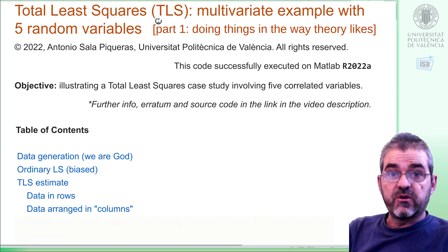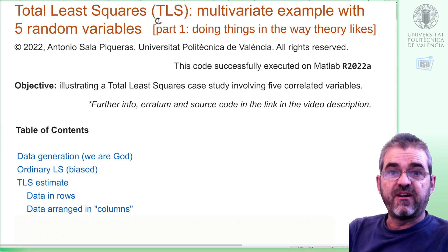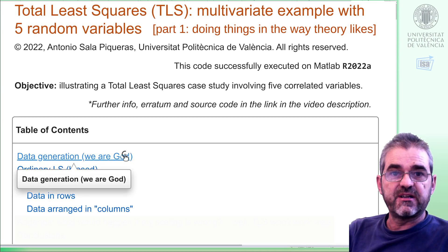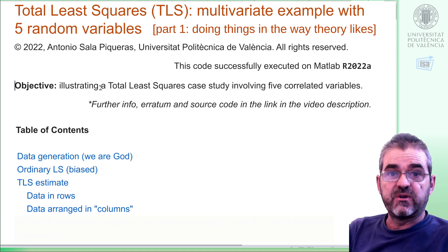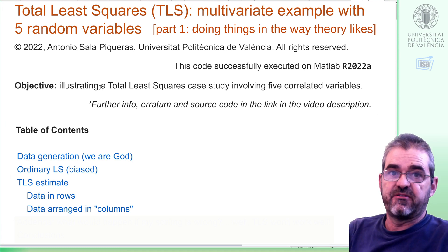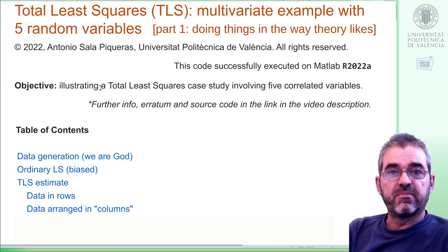In this video we are going to go through a total least squares example in MATLAB in which we will try to find correlations between five variables. We will first see how the data are generated so that we know the true model, and then we'll carry out total least squares and check that we indeed get the true model. Everything is prepared for it to work perfectly as the theory predicts. Real life may be different.